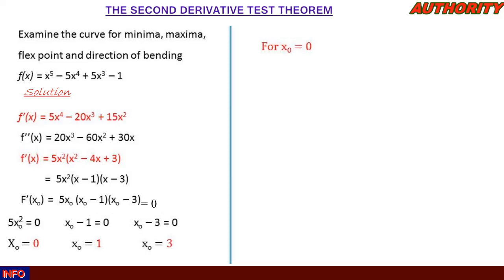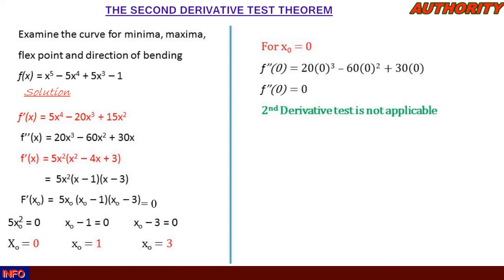For x₀ = 0, we plug into the second derivative f''(x) = 20x³ − 60x² + 30x. We get f''(0) = 20(0)³ − 60(0)² + 30(0) = 0. Since f''(0) = 0, the second derivative test theorem is not applicable here — it is neither greater than zero nor less than zero.